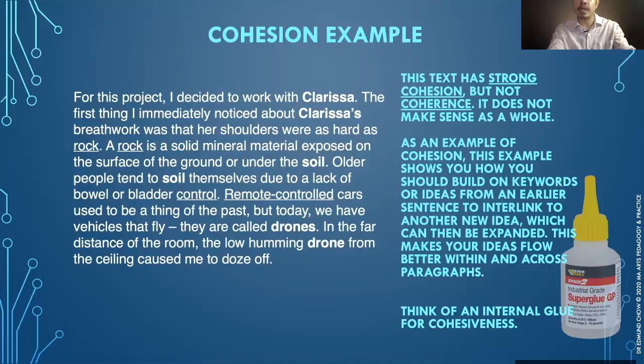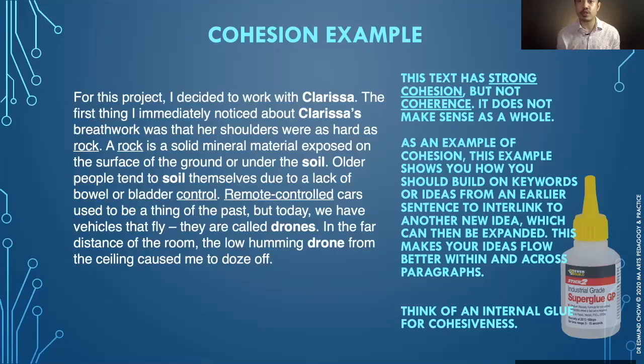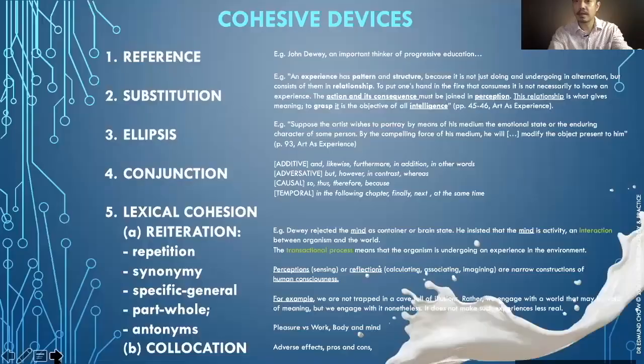In a way this is very cohesive — every keyword is being repeated and extends into something different, a new idea. But this example does not make sense because it moves from Clarissa to rocks to soil to control to drone. There is strong cohesion but not coherence. As an example of cohesion, it shows you how you should build on keywords or ideas from an earlier sentence to interlink to a new idea which can then be expanded — making ideas flow better within and across paragraphs. Cohesion is internal glue that contributes to text structure, texture, readability, and comprehensibility.